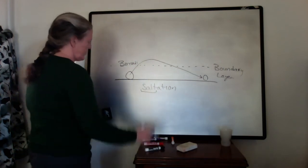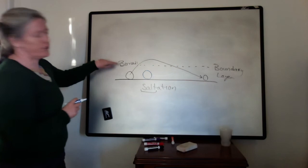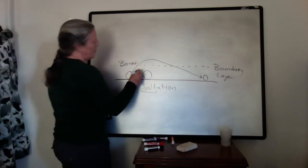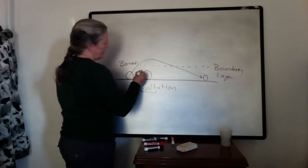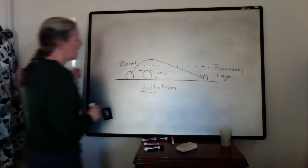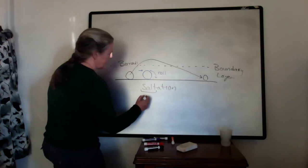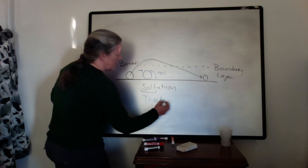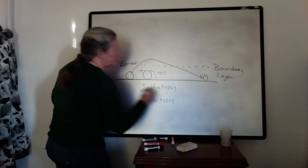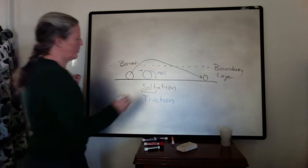So we've also talked about this where you have a grain, and maybe the Bernoulli effect is not large enough to pick it off the bed, but you have the force at the top of the grain is large enough to cause the grain to roll. So these two methods, the blue is we call it traction. It's basically moving like maybe a tractor track or roller, it's just rolling along the bottom.